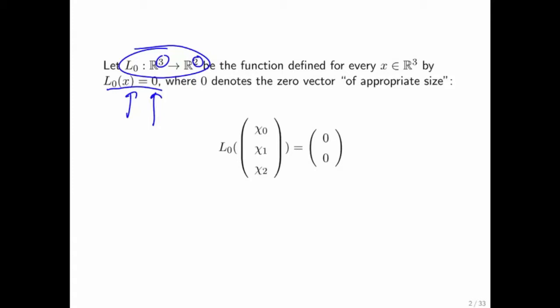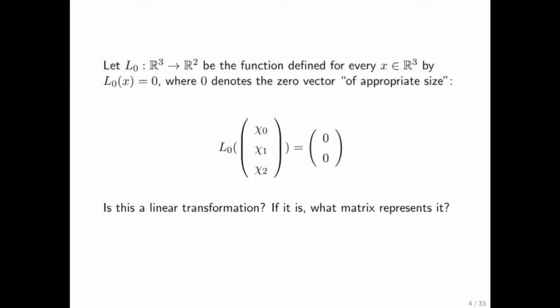So here we have x with its components exposed, and no matter what those components are, out pops a vector of size 2 with zeros as its entries. So the question becomes, is this a linear transformation? And if so, what matrix represents it?